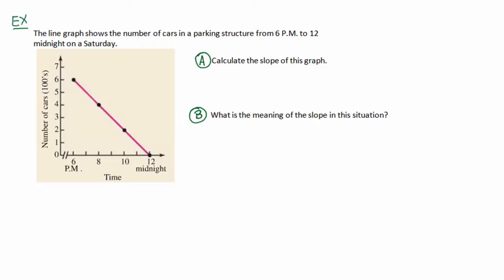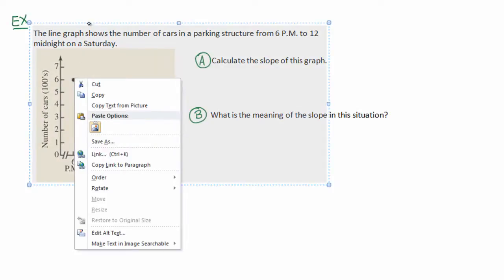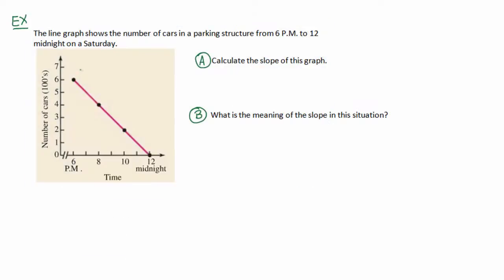But just because that's the number of cars in hundreds, this point, for example, right there, that point would still be considered 6, 6, not 6, 600. And this point right here would still be considered 10, looks to be about 2, not 10, 200. You use the units for the axes themselves, the numerical units. And then we interpret that using the scale here - the number of cars being in hundreds, we'd say that 2 means two hundreds.